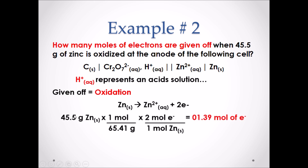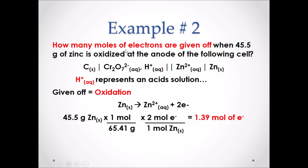We can then start with the 45.5 grams of zinc and divide it by the molar mass of zinc to get moles of zinc. We can then use the molar ratio in the chemical equation, which will be a two over one, to get the moles of electrons, which is 1.39 moles.